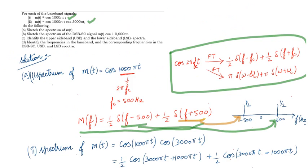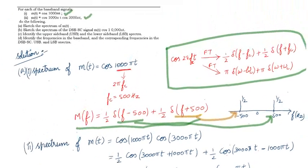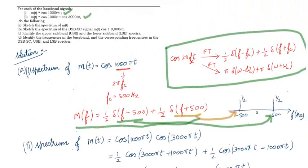So to summarize what we have done: first we sketched the message signal spectrum, then we multiplied the message with the carrier cos(10000πt) — that is the carrier signal — to obtain the DSB-SC signal. We did this for both m(t) signals, then identified the upper sideband and lower sideband frequencies.